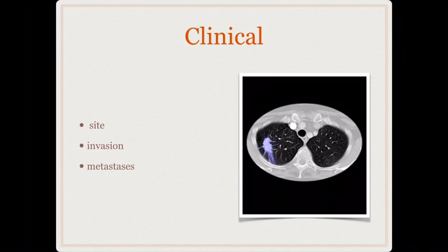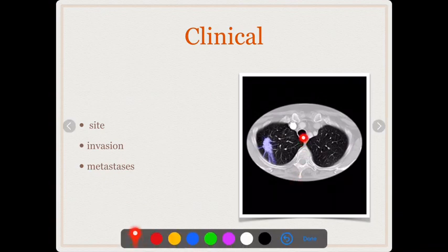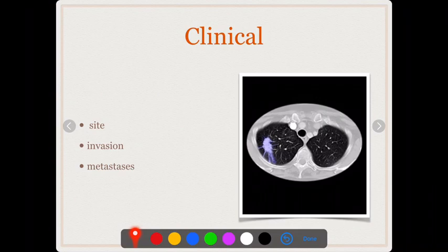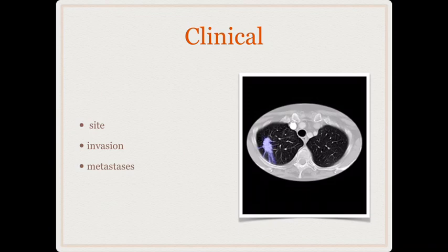Lung cancers produce different clinical symptoms depending on the location of the tumor. If the tumor is centrally located abutting the trachea or main bronchus, the patient will have cough, hemoptysis, and dyspnea. If the tumor is present peripherally away from central structures, it can essentially be asymptomatic. Centrally located tumors present early, while peripherally located tumors may only be diagnosed when metastasis happens.